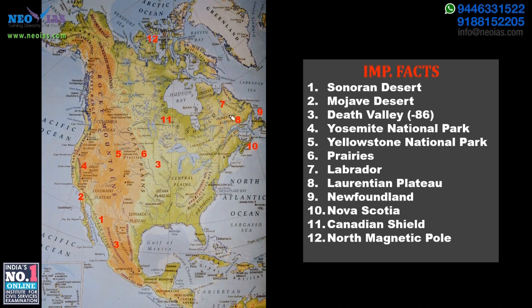This sea here is the Labrador Sea, and an important region called Newfoundland is located here. Regarding the Titanic: icebergs were carried from the cold Labrador Sea by the Labrador Current to Newfoundland, where the ship collided with them and sank. Newfoundland is also a very famous fishing ground because of the convergence of two oceanic currents — the Gulf Stream and the Labrador Current.